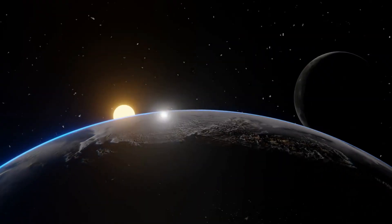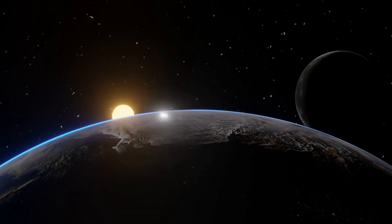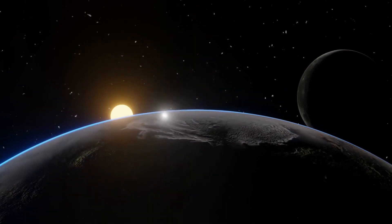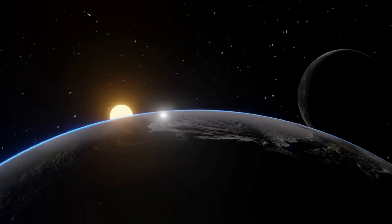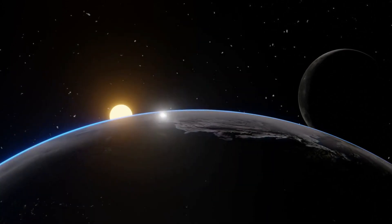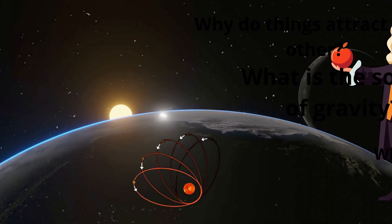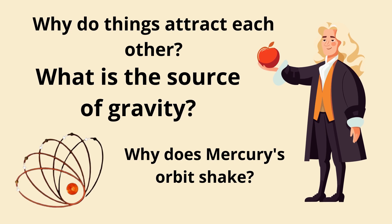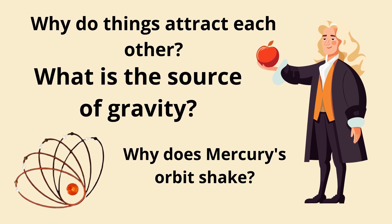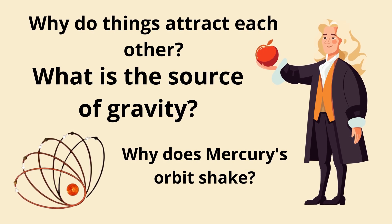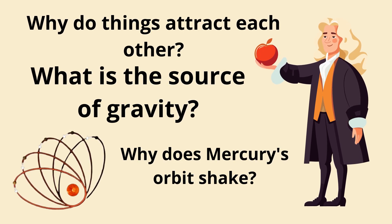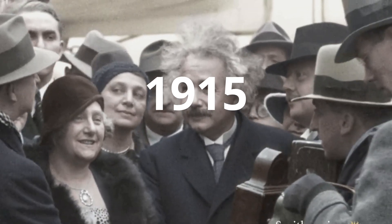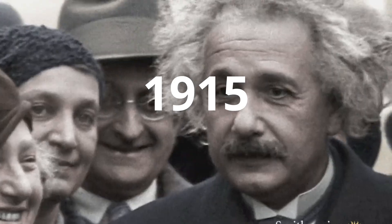But this did not answer all of Newton's questions. For example, why do objects attract each other? What is the source of gravity? Why does Mercury's orbit wobble? The rest remained a mystery until the era of Albert Einstein.